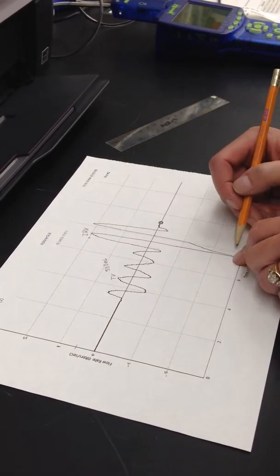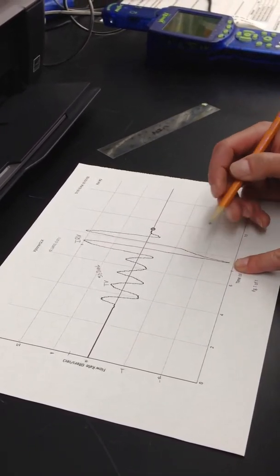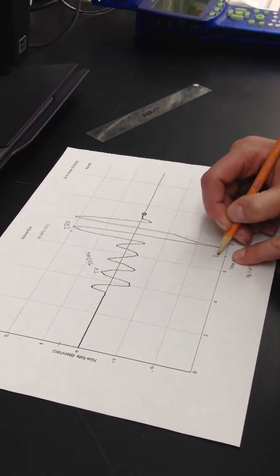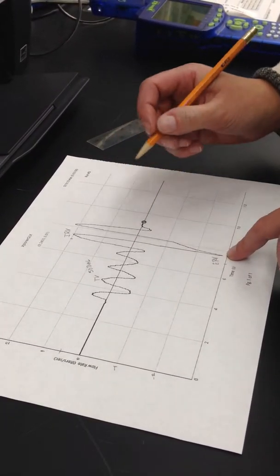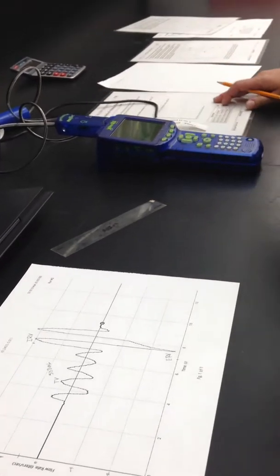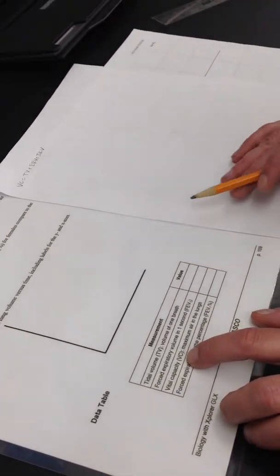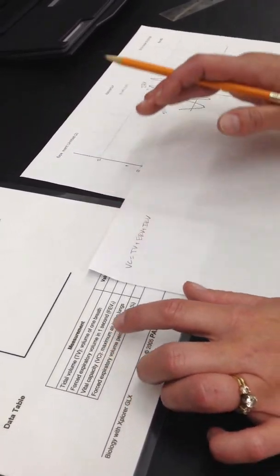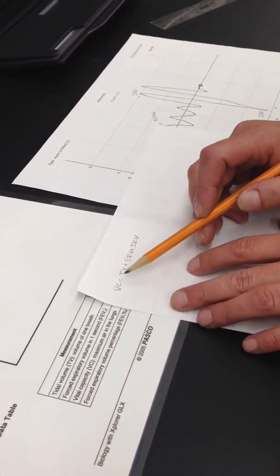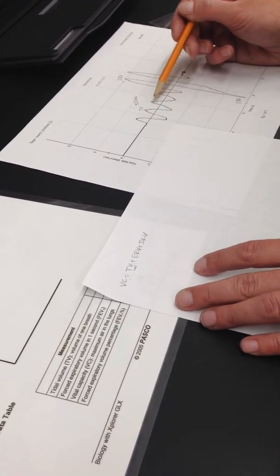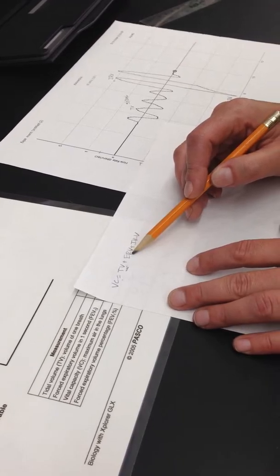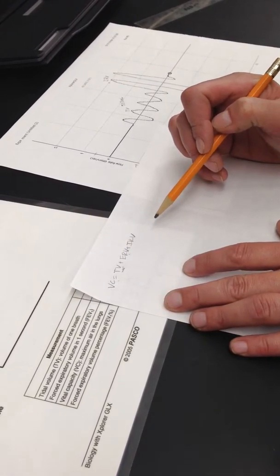And then when you forcefully breathe out, down here that is called your expiratory reserve volume. And there's one other value that your lab sheet will ask you to calculate. It's called your vital capacity. Vital capacity is the maximum air in the lungs. And you can calculate it by adding up your tidal volume, which is this, and your expiratory reserve volume, and your inspiratory reserve volume.